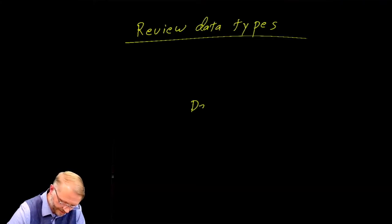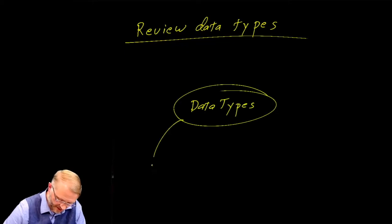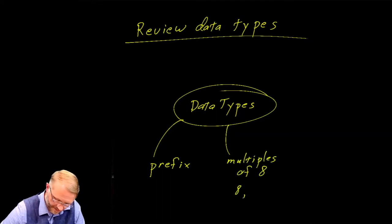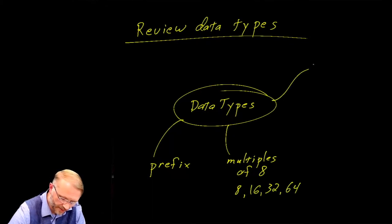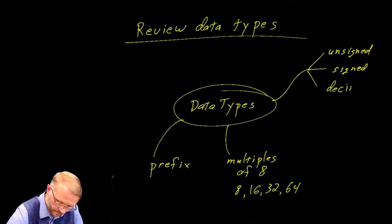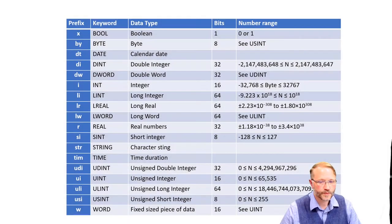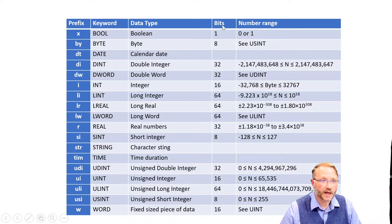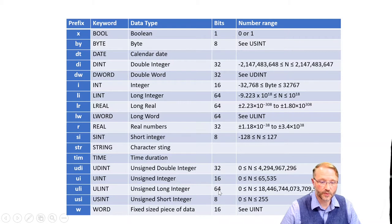We can mind map this with ideas such as prefix, multiples of 8 — such as 8, 16, 32, and 64 — and then we have different types such as unsigned, signed, and decimal. You'll recall this table from the textbook where we talked about the bit width of a data type. For example, we have the unsigned short integers with a bit width of 8, all the way to things like the unsigned long integer with bit widths of 64.